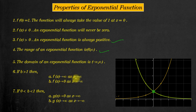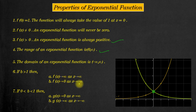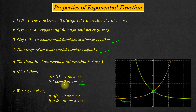Referring to the yellow curve (b > 1): as x approaches infinity, f(x) also approaches infinity — the y-value approaches infinity. And as x approaches negative infinity, f(x) approaches zero.